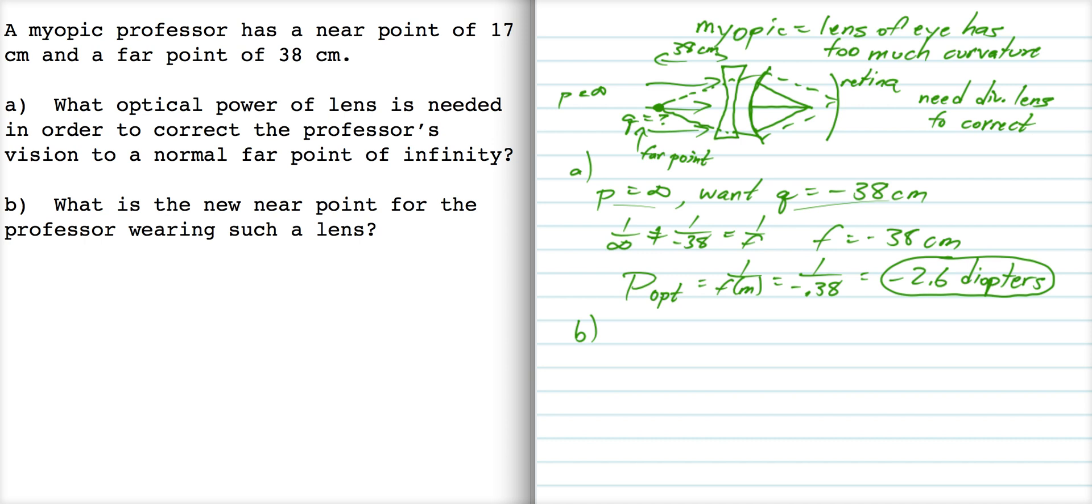Now, for part B, a little more complicated, it says what's the new near point for the professor wearing such a lens? Alright, so the near point is the closest place that an object can be.